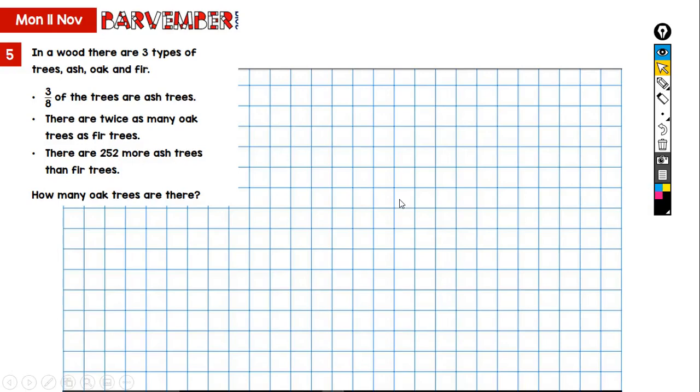Okay, Monday the 11th of November's Barvember challenge from White Rose Maths. In a wood there are three types of trees: ash, oak and fir. Three-eighths of the trees are ash trees. There are twice as many oak trees as fir trees and there are 252 more ash trees than fir trees. And the question we're asked is how many oak trees are there?